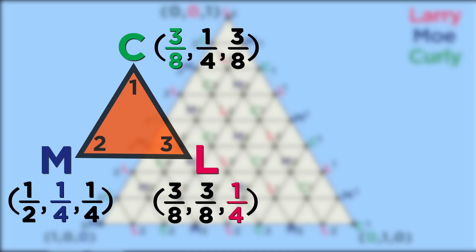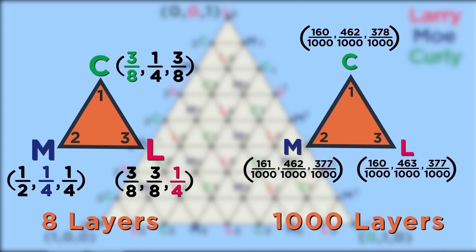Because we only divided the triangle into 8 layers, the price distributions at the three corners of the small triangle are pretty different. But if we broke it into a thousand layers and repeated a similar procedure, Sperner's Lemma tells us that there would still be a fully labeled triangle — one where each person prefers a different room. The three corners of this triangle correspond to pretty similar rent distributions. So Curly gets room 1 for 160/1000th of the rent, Mo gets room 2 for 462/1000th, and Larry gets room 3 for 377/1000th. That leaves 1/1000th of the rent unpaid, but the smaller we cut the triangles, the more precise it'll be.